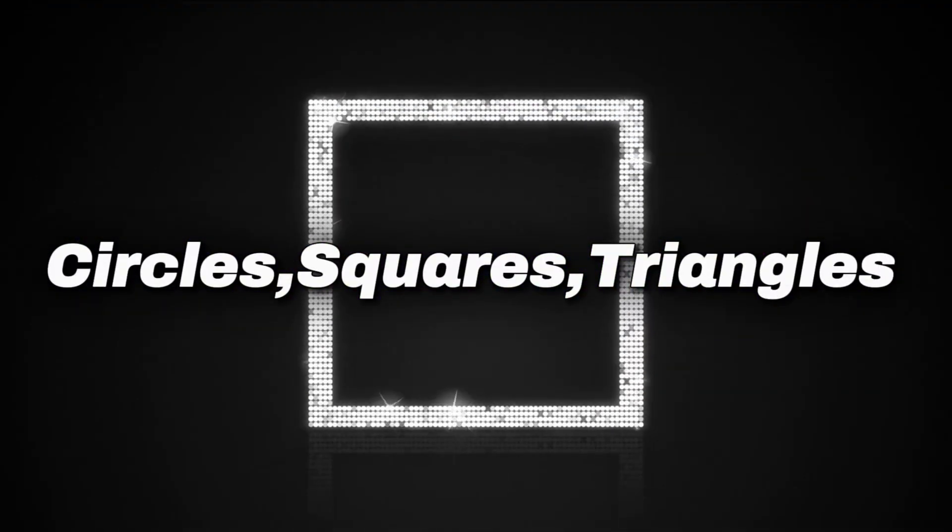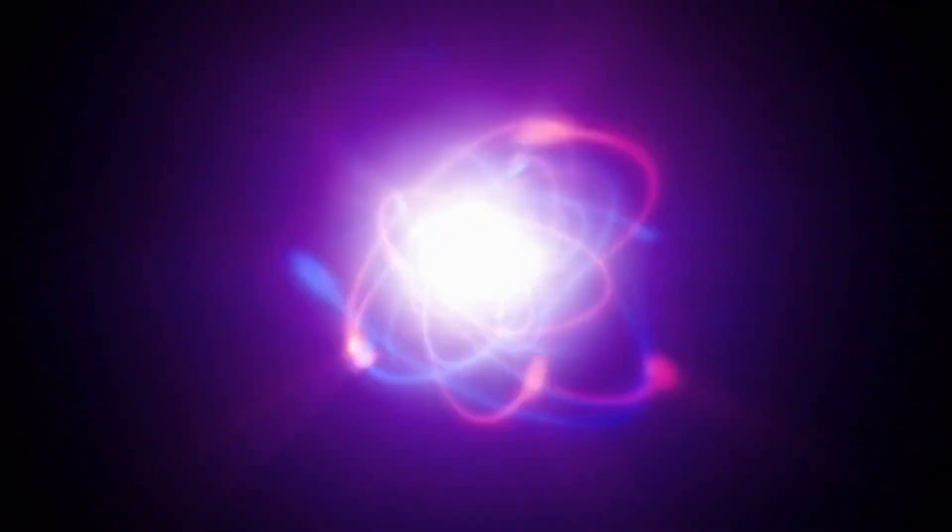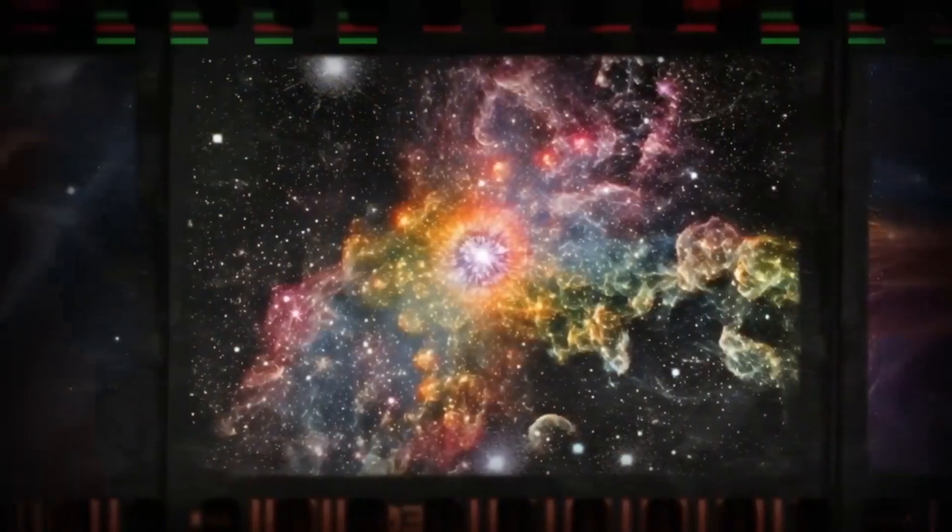Yet what we see is the confetti organizing itself into perfectly shaped numbers and geometric objects: circles, squares, triangles, which represent subatomic particles, atoms, and molecules. And not just that, the universe appears to be uniform in all directions.